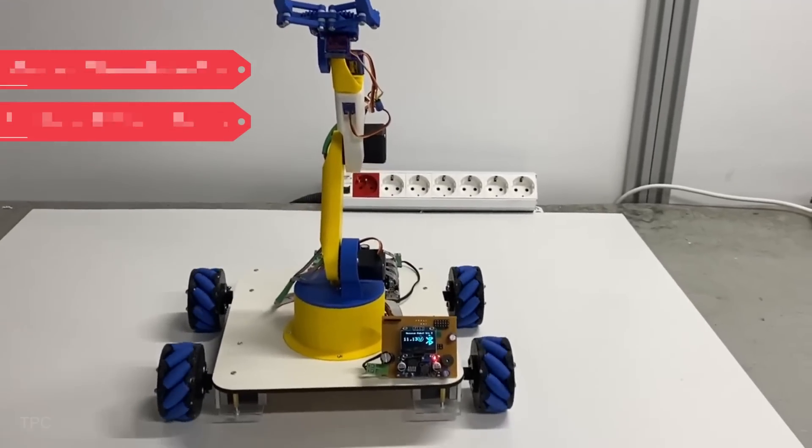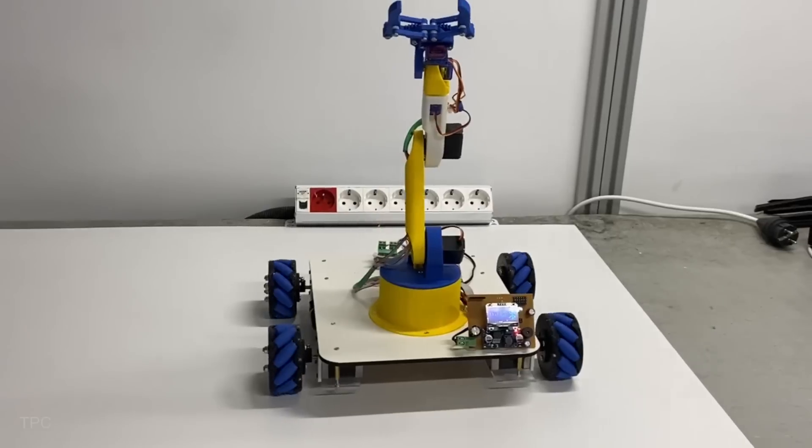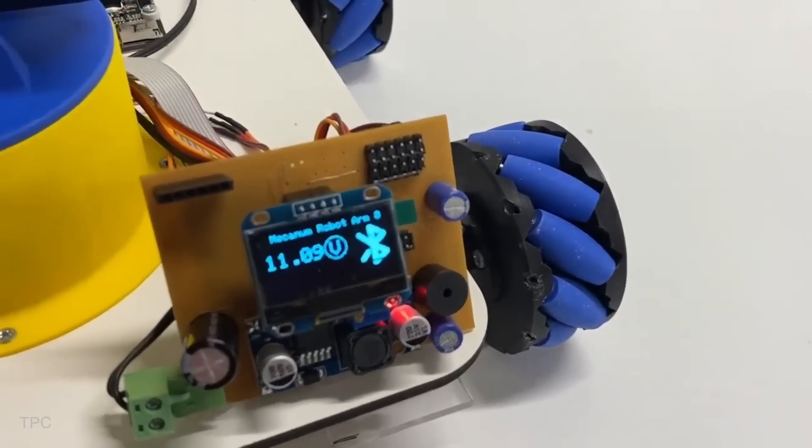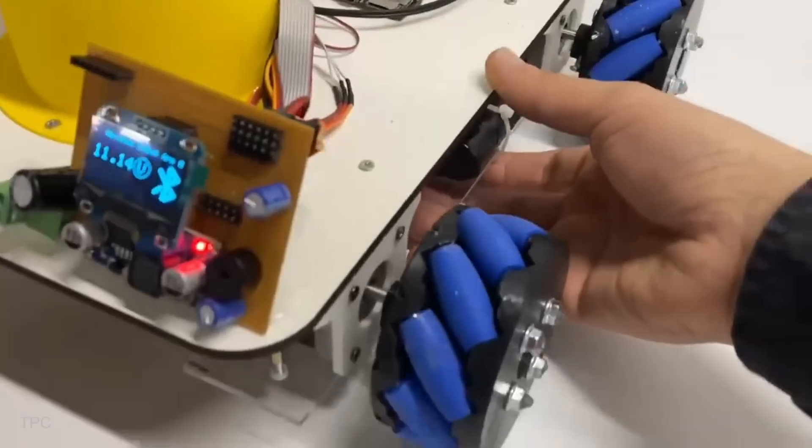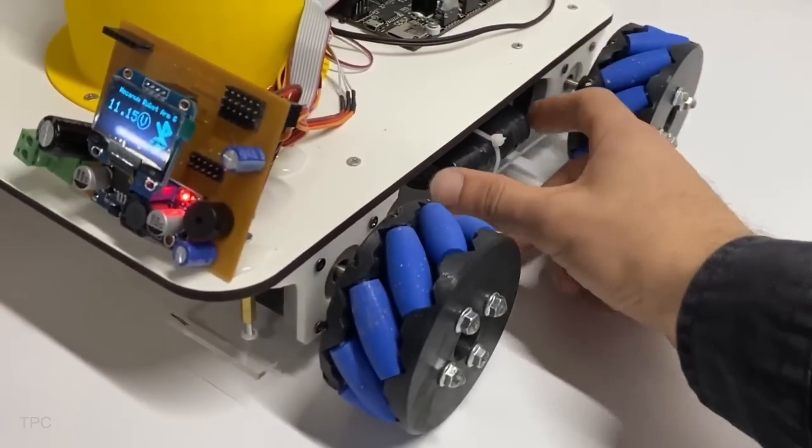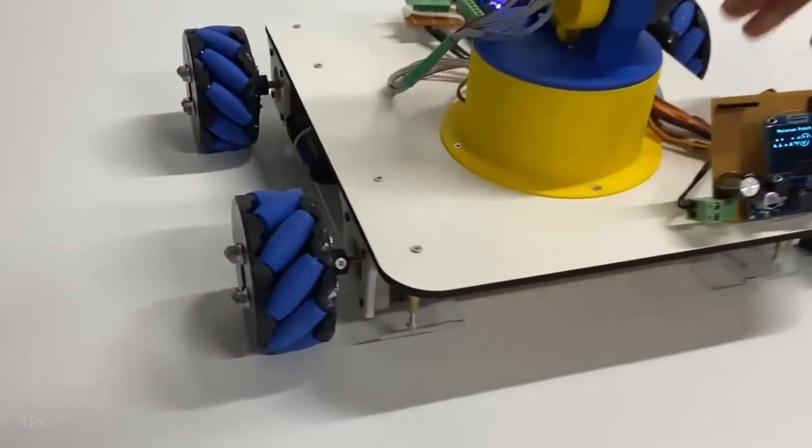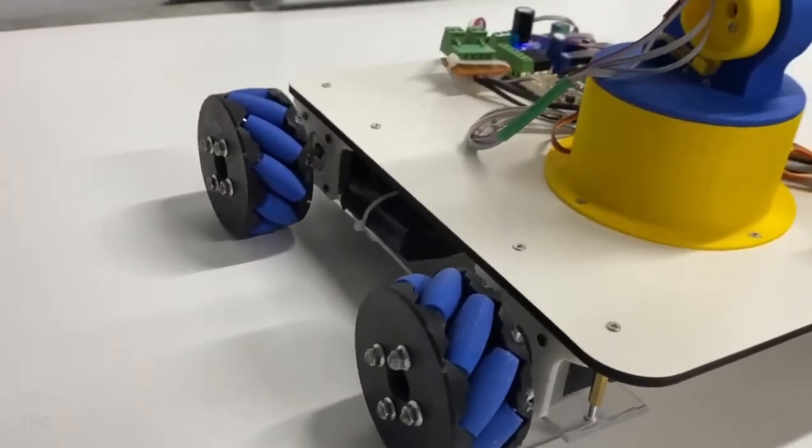Number 9. Aladdin built a mecanum-wheeled robotic arm using an STM32 and an ESP32 for control, with an OLED display providing real-time feedback. The robot uses stepper motors for precise movement, with dual 3S batteries, one powering the wheels and the other dedicated to the robotic arm.